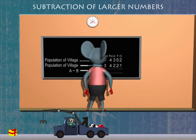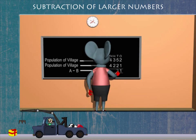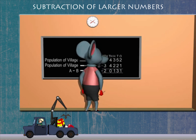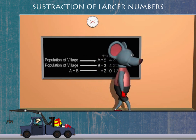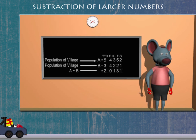A minus B gives twenty thousand one hundred and thirty-one. Robbie is smart as ever.